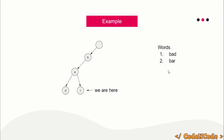If you want to search 'bad', you start from the root, check whether 'b' exists — yes — then go to 'a', then go to 'd'. Since we've matched all characters, we return true. If you want to search 'man', you start from the root, check whether 'm' exists as a child — the answer is no — so directly from there you return false. This is how searching and insertion take place in the trie data structure.